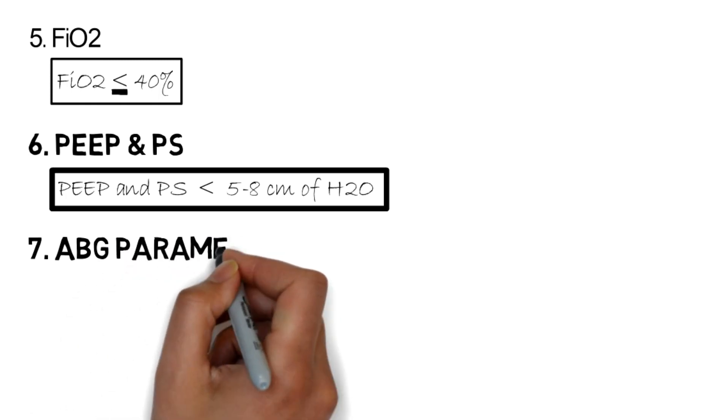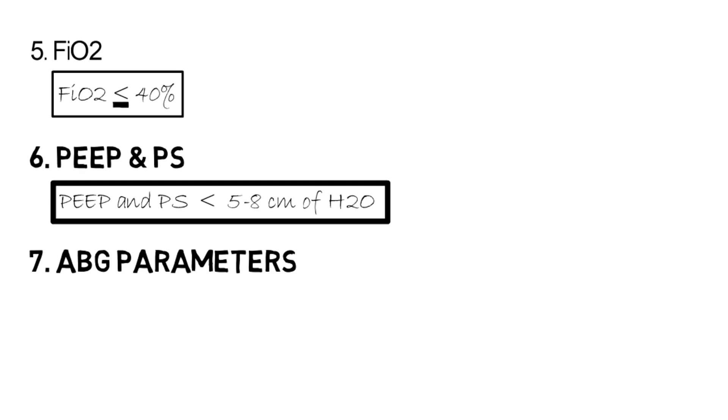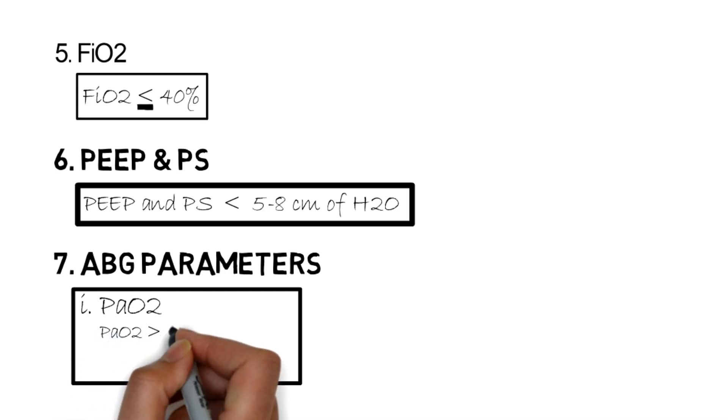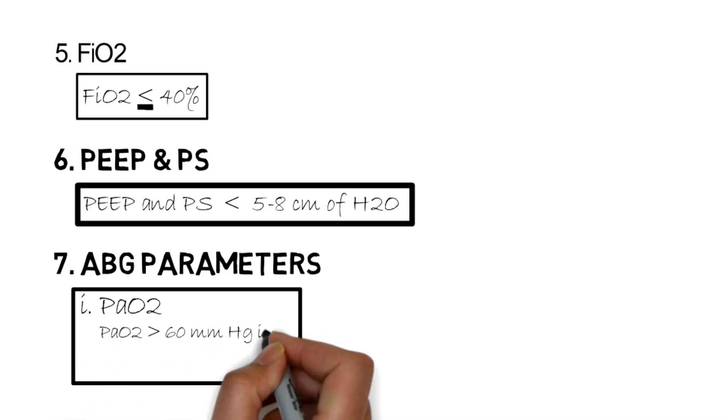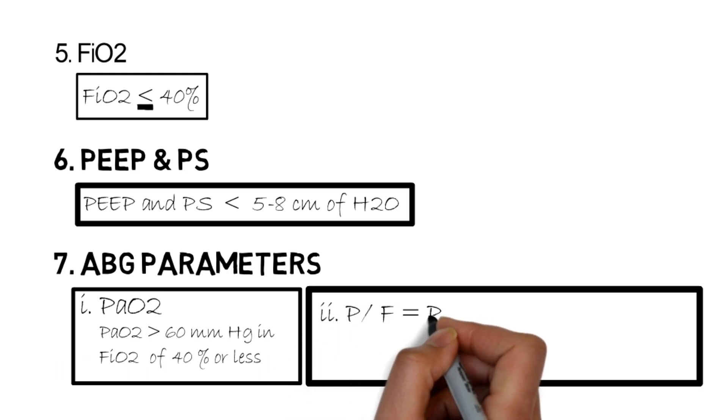In addition, arterial blood gas analysis helps determine extubation criteria. First is PaO2, the partial pressure of oxygen in arterial blood, which should be more than 60 mmHg with FiO2 of 30% or less.